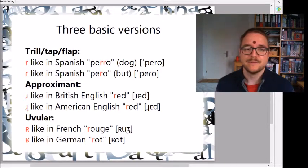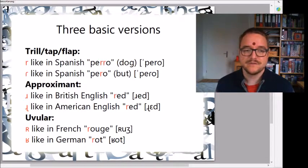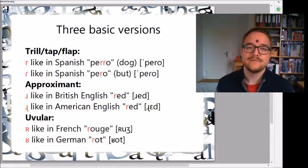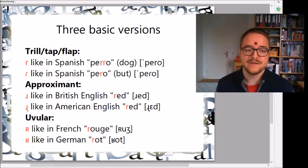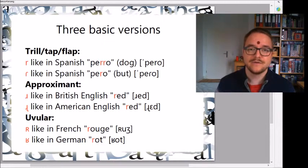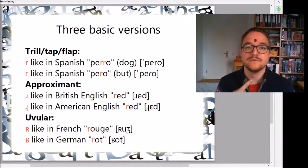Then we have the approximants as a second version of R sounds, like the British 'red' or the American 'red'. And finally we have the third group, which are the uvular R sounds, like in French 'rouge' or in German 'rot', which are sounds made at the back of your mouth with the uvula.